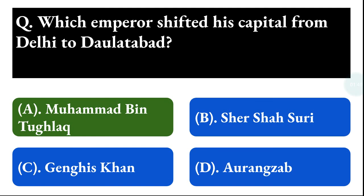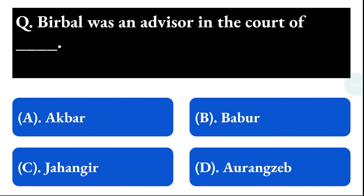Next question: Birbal was an advisor in the court of — option A: Akbar, option B: Babur, option C: Jahangir, option D: Aurangzeb. The correct answer is option A, that is Akbar.